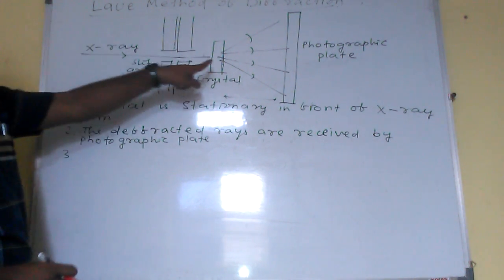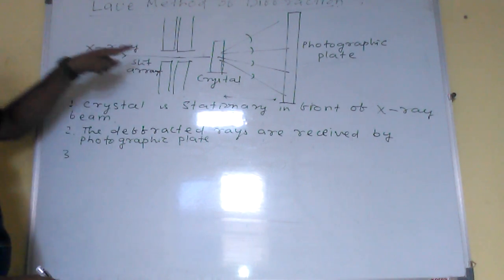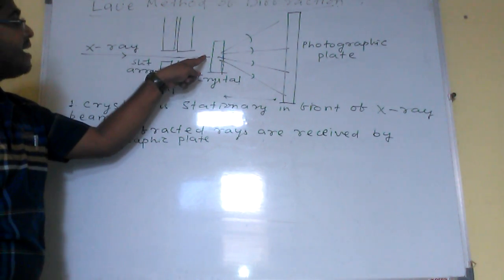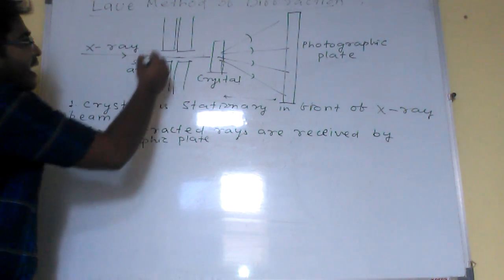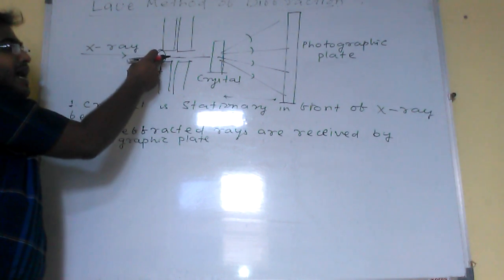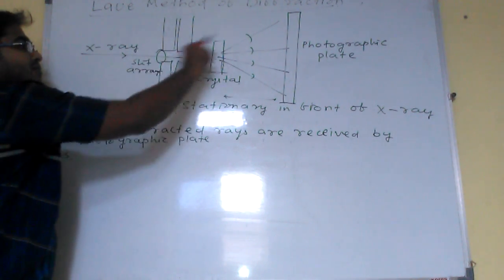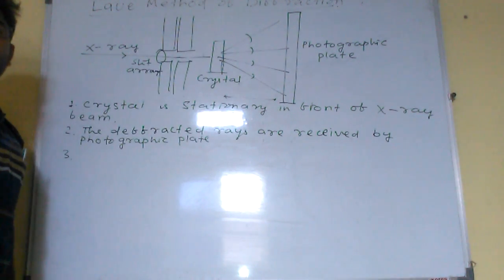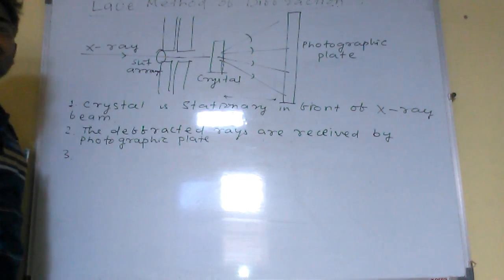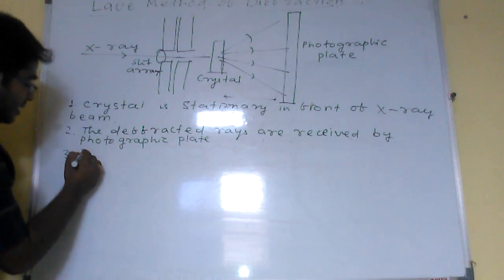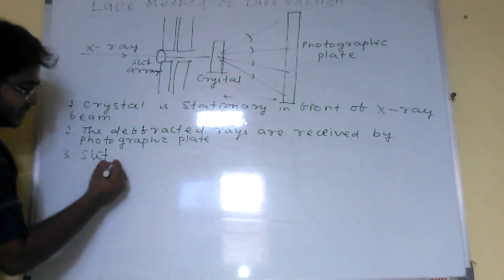So before falling on the crystal, this x-ray has to pass through this slit arrangement. The narrower the width or diameter of the slit, the finer and clearer the interference pattern that can be observed. That is the slit condition.